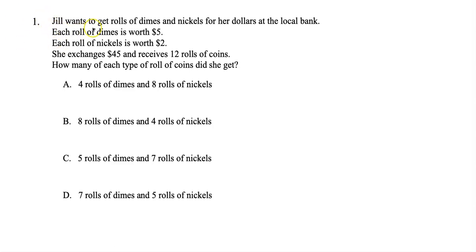Question 1. Jill wants to get rolls of dimes and nickels for her dollars at the local bank. Each roll of dimes is worth $5. Each roll of nickels is worth $2. She exchanges $45 and receives 12 rolls of coins. How many of each type of roll of coins did she get?